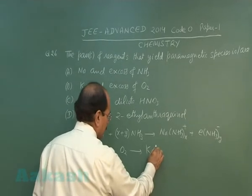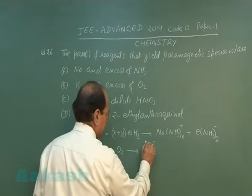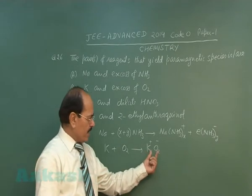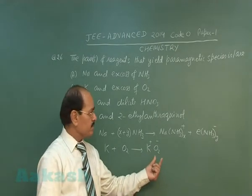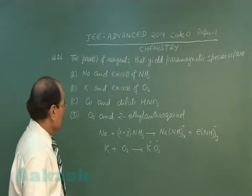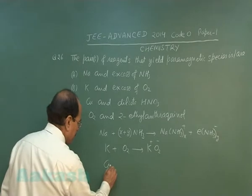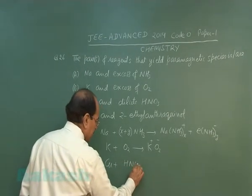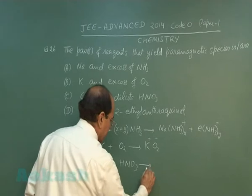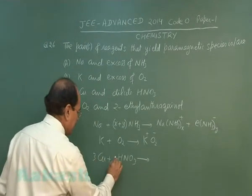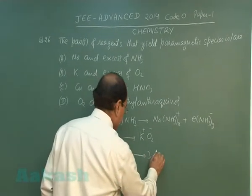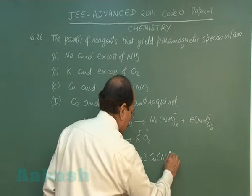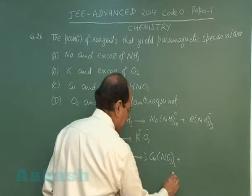Potassium reacts with oxygen to form potassium superoxide. The superoxide anion is paramagnetic.